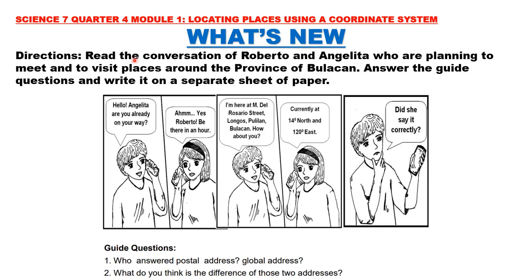What's New: Read the conversation of Roberto and Angelita who are planning to meet and visit places around the province of Bulacan. Answer the guide questions on a separate sheet of paper. Roberto says: 'Hello, Angelita, are you already on your way?' Angelita replies: 'Yes, Roberto. I'm here at M. Del Rosario Street, Longos, Pulilan, Bulacan. How about you?' Roberto answers: 'Currently at 14 degrees north and 120 degrees east.' Guide questions: Who answered with a postal address? Who answered with a global address? And what is the difference between those two addresses?